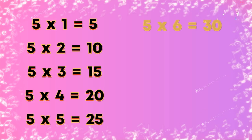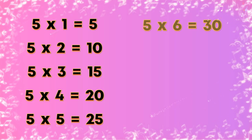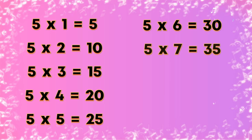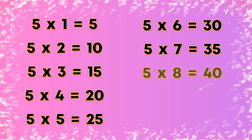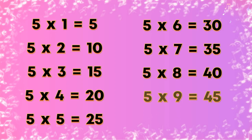Table of 5: 5×1=5, 5×2=10, 5×3=15, 5×4=20, 5×5=25, 5×6=30, 5×7=35, 5×8=40, 5×9=45, 5×10=50.